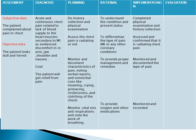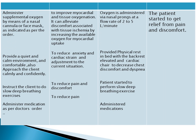For the planning and implementation: do history collection to understand the condition of the patient, and complete a physical examination. Assess whether the chest pain is radiating or not, to differentiate the type of myocardial infarction. Monitor and document the characteristics of pain to provide proper management. Monitor vital signs and respiration and note the work of breathing to provide oxygen and other medications. Administer supplemental oxygen if there is breathing difficulty, to improve myocardial and tissue oxygenation — oxygen is administered via nasal prongs at a flow rate of two to five, depending on the doctor's order.